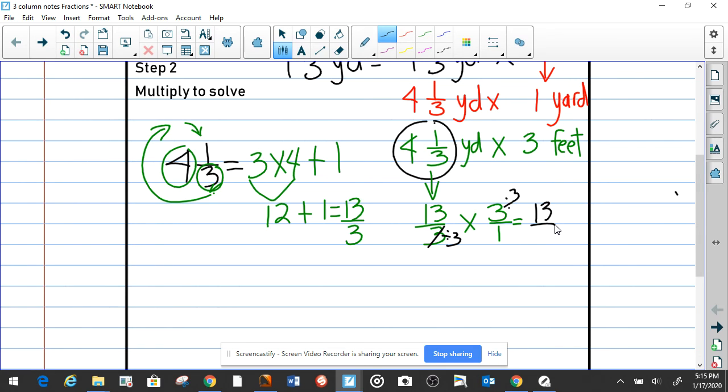That 13 stays the same. 3 divided by 3 equals 1, times 3 divided by 3 equals 1, and 1 times 2 equals 1. Then we have our answer here: 13 times 1 equals 13, and 1 times 1 equals 1. We know that 13 divided by 1 equals 13.